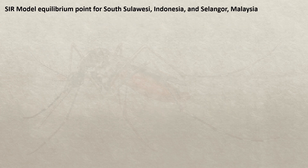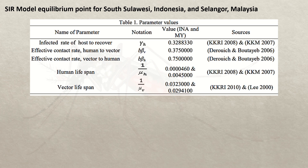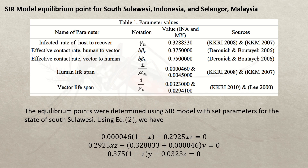Now for the SIR model equilibrium points for South Sulawesi, Indonesia, and Selangor, Malaysia — these are the two cities. The data and parameter values have been found, including gamma sub h, beta, b, beta v, and so on. With all values calculated, we substitute them into our model to see whether the recorded cases are endemic, stable, or not. The equilibrium points were determined using the SIR model with set parameters for South Sulawesi using Equation 2.